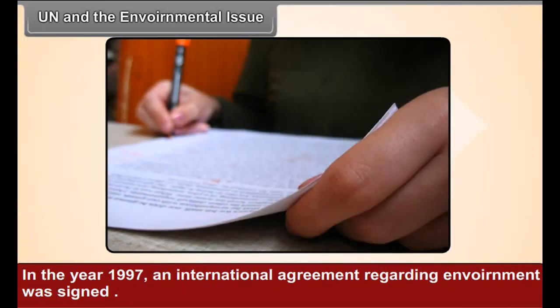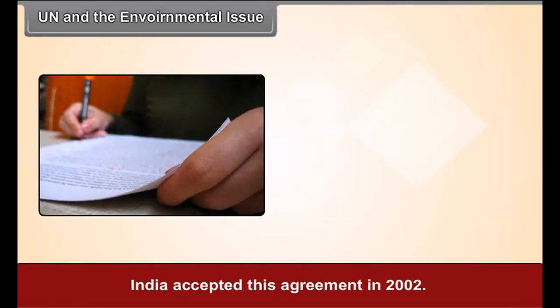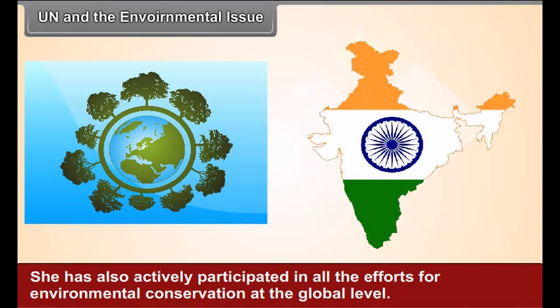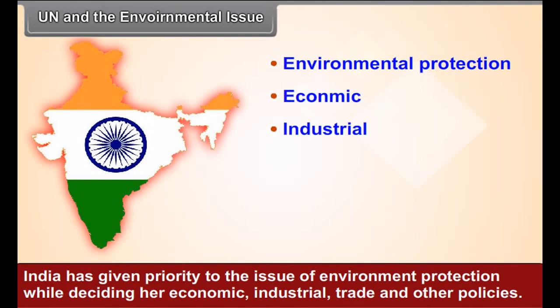In the year 1997, an international agreement regarding environment was signed. This is known as the Kyoto Protocol. India accepted this agreement in 2002. She has also actively participated in all the efforts for environmental conservation at the global level. India has given priority to the issue of environmental protection while deciding her economic, industrial, trade and other policies.